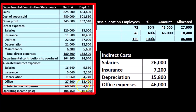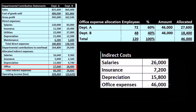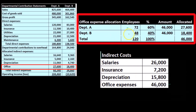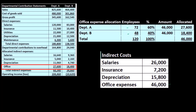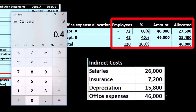For office expenses we use a different activity base. We don't want to use sales or square footage for office expenses — we think the number of employees is most relevant, since employees are the primary users of office expenses. The department with more employees probably uses more. Department A has 72 employees and Department B has 48, totaling 120. We do our ratio analysis: 72 divided by 120 gives us 60%, and 48 divided by 120 gives us 40%.